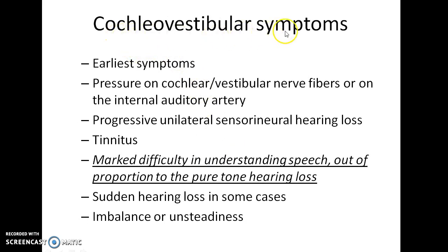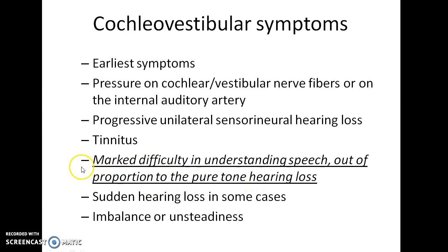The cochlear-vestibular symptoms seen in acoustic neuroma are the earliest symptoms. They are due to pressure on cochlear or vestibular nerve fibres or on the internal auditory artery. Progressive unilateral sensorineural hearing loss is the chief symptom. Acoustic neuroma can also present with tinnitus. There will be marked difficulty in understanding speech, which is out of proportion to the pure tone hearing loss — a classical feature. Sudden hearing loss and imbalance or unsteadiness due to vestibular system involvement can also be seen.